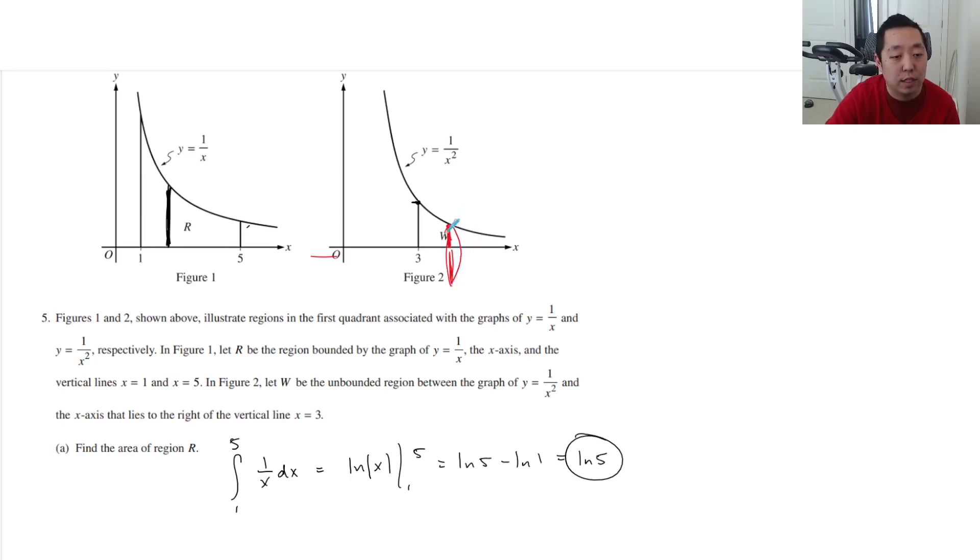You're revolving around the x-axis, taking this region and revolving it around the x-axis. So it's a solid disk. When you integrate that, this is π times r squared. r is the height of my rectangle, which is 1 over x squared, squared. That's the area of my circle from 3 to infinity. So I can pull out π and integrate from 3 to c of 1 over x to the 4th dx, taking the limit as c goes to infinity.